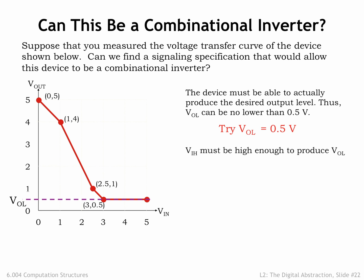We want the inverter to produce a valid digital 0 whenever its input is a valid digital 1. Looking at the VTC, we see that if the input is higher than 3V, the output will be less than or equal to VOL, so let's set VIH to 3V.